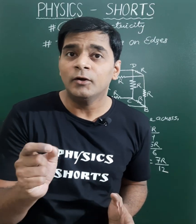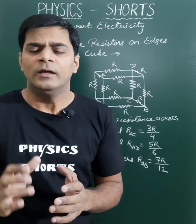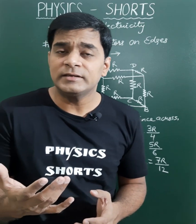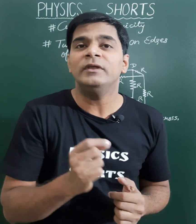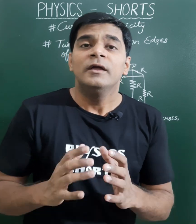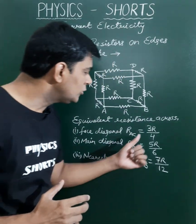12 resistors are connected across the edges of a cube. What will be the equivalent resistance across any face diagonal, any main diagonal, or any two nearest corners? Here I am giving you the short trick.